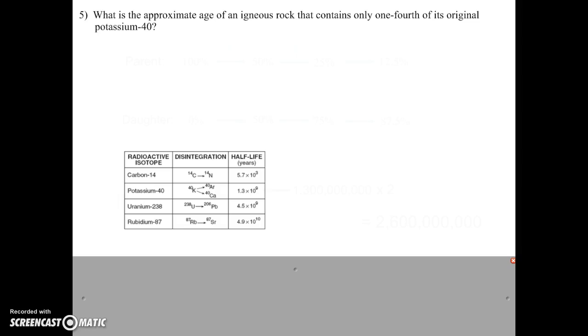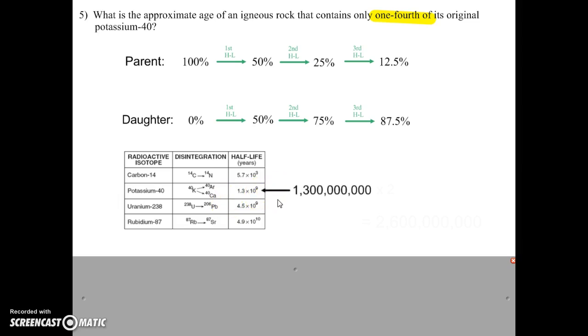Okay, let's look at two more questions. So what is the approximate age of an igneous rock that contains only one-fourth of its original potassium-40? So there's only one-fourth of it remaining. So that's the key to figuring this out. So again, I need that chart. Well, if there's only one-fourth left, that means it went through two half-lives. Because two half-lives gets you to a fourth. We're dealing with potassium-40. So one half-life is 1.3 billion years. Now, we said it had to go through two half-lives. So we're going to simply multiply this by two, and that will give us 2.6 billion years. That's the age of this rock.